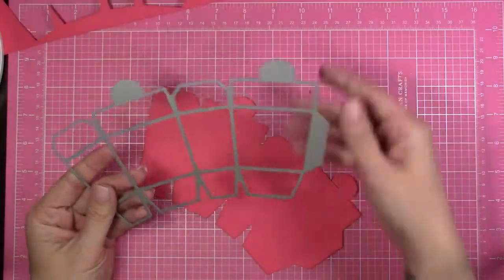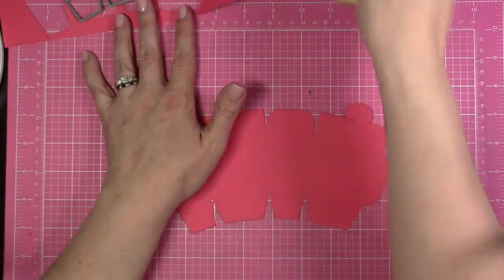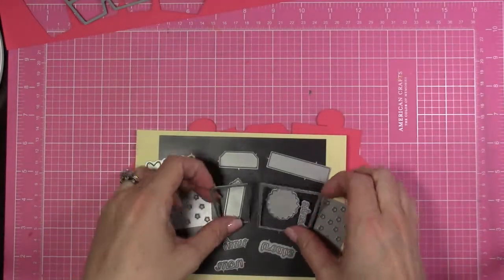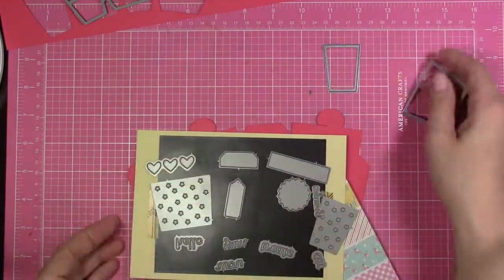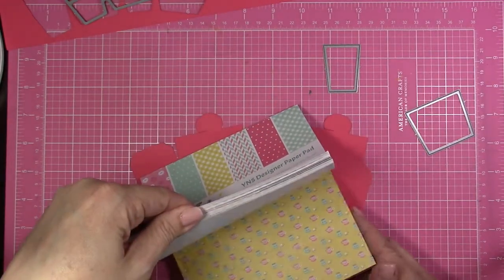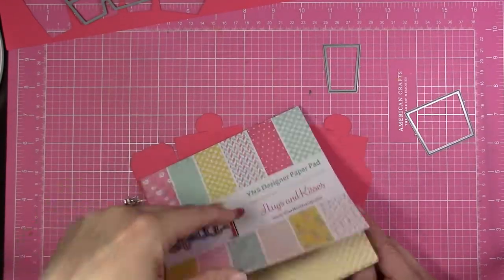So I went ahead and ran the base part of the box through the Big Shot, and this set comes with additional pieces you can use to build your box and decorate it. I'm going to be using these two pieces here that you can use to cut pattern paper, or you can also use these pieces to cut a window in the box.